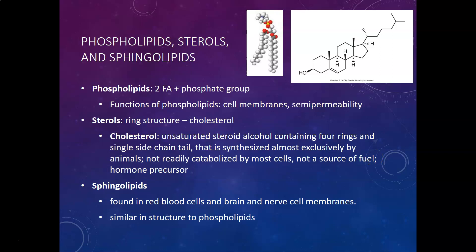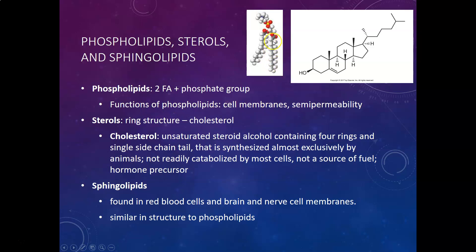Phospholipids consist of two fatty acids with a phosphate group. The same saturated versus unsaturated rules apply — more unsaturated tails make the membrane more fluid and healthier. The phosphate head, shown at the top of the diagram, is water-soluble, while the fatty acid tails are water-insoluble or hydrophobic. In the cell membrane, the tails face each other while the phosphate heads face the inside and outside of the cell, where water is present. This structure allows for the semi-permeability of cell membranes.